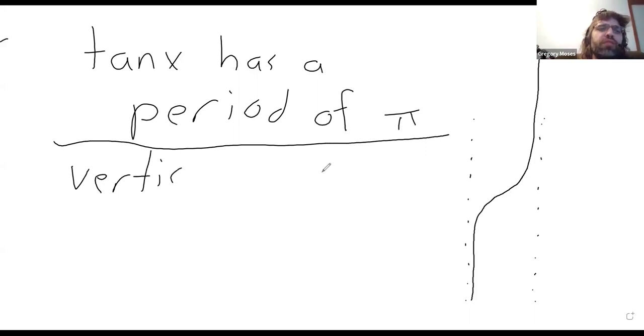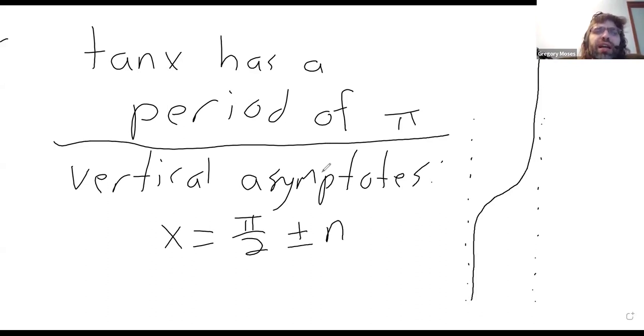but the vertical asymptotes occur at x equals pi over 2 plus or minus n times pi, where n is a natural number. In case there's anything unclear about this, let's go back to Desmos.